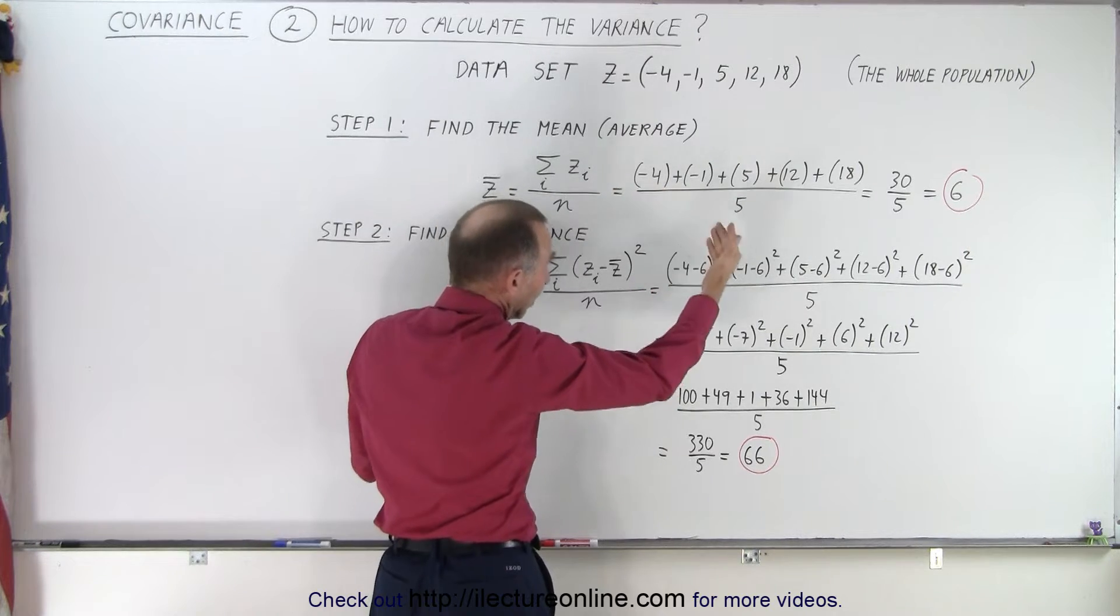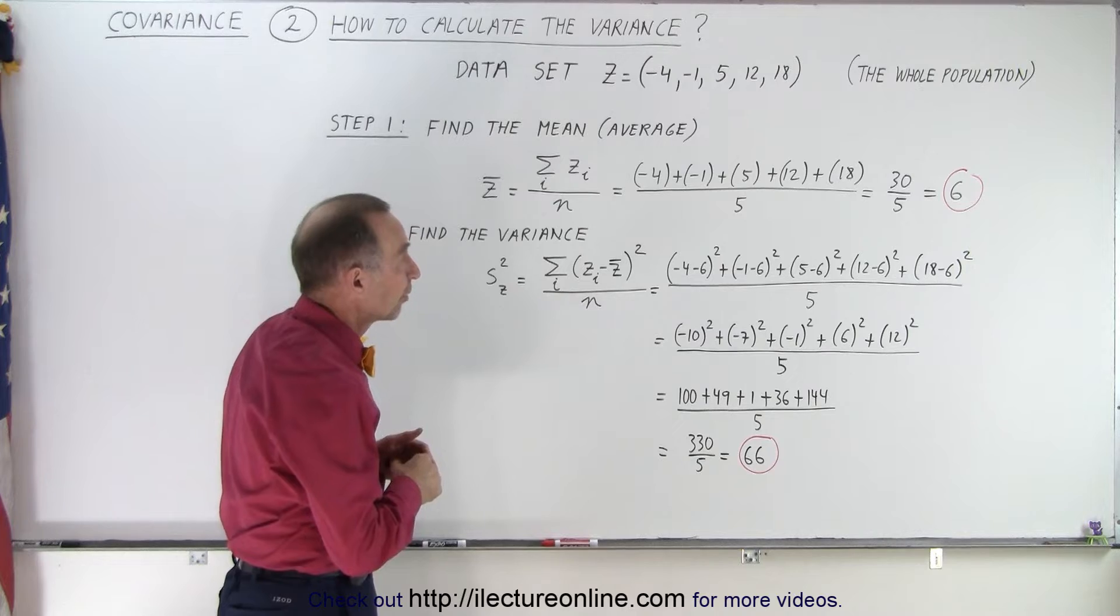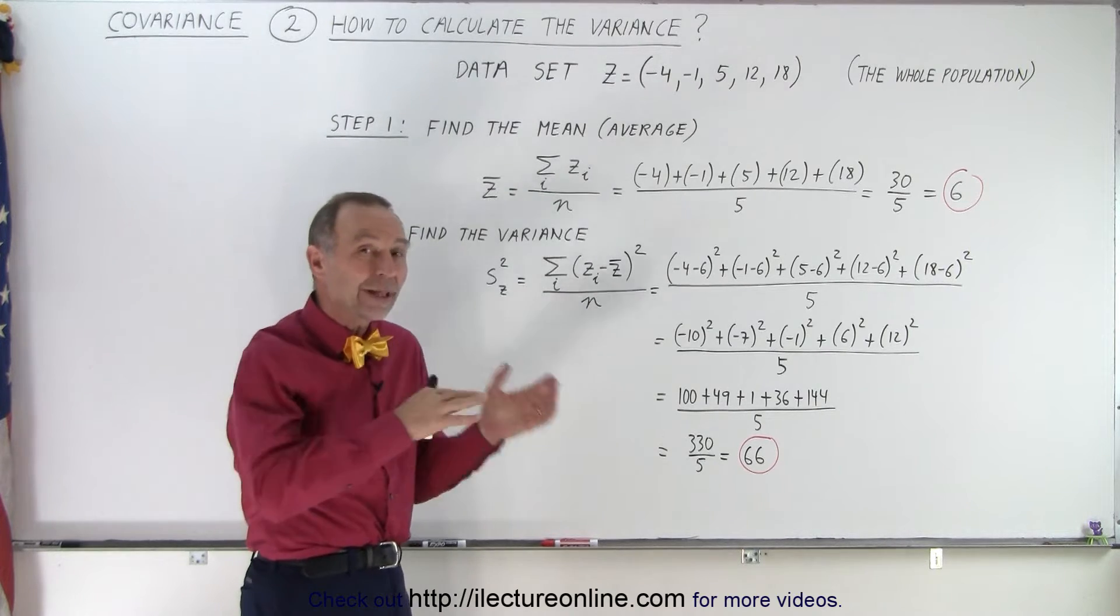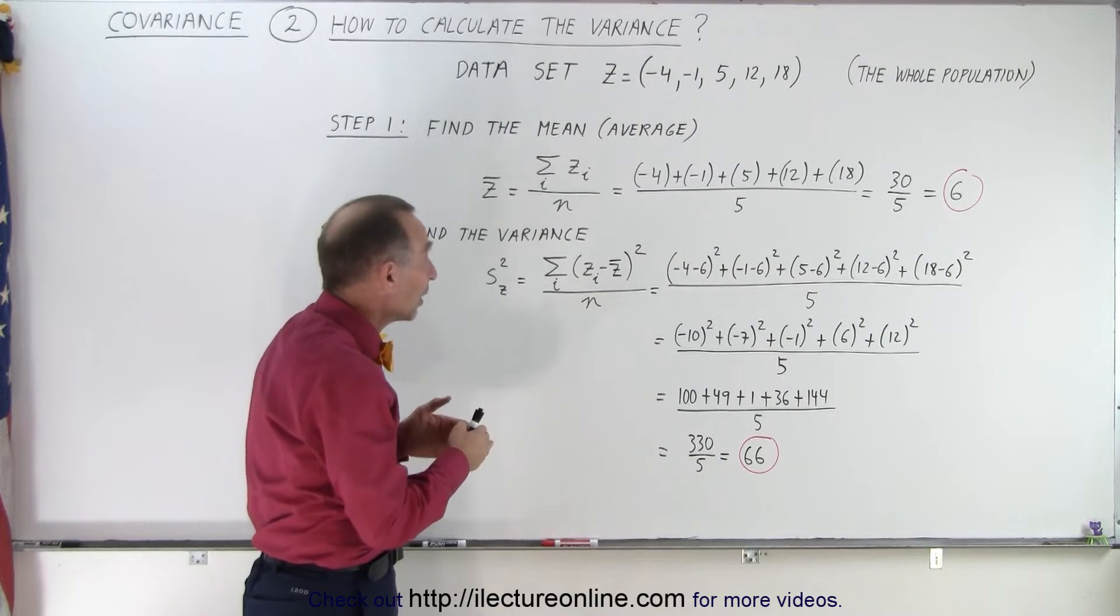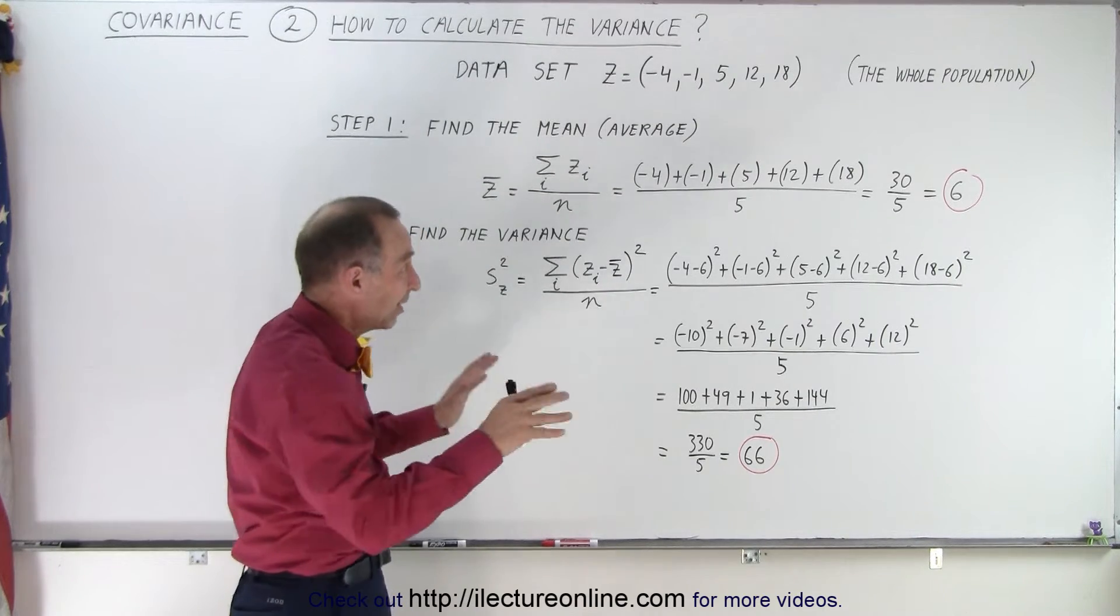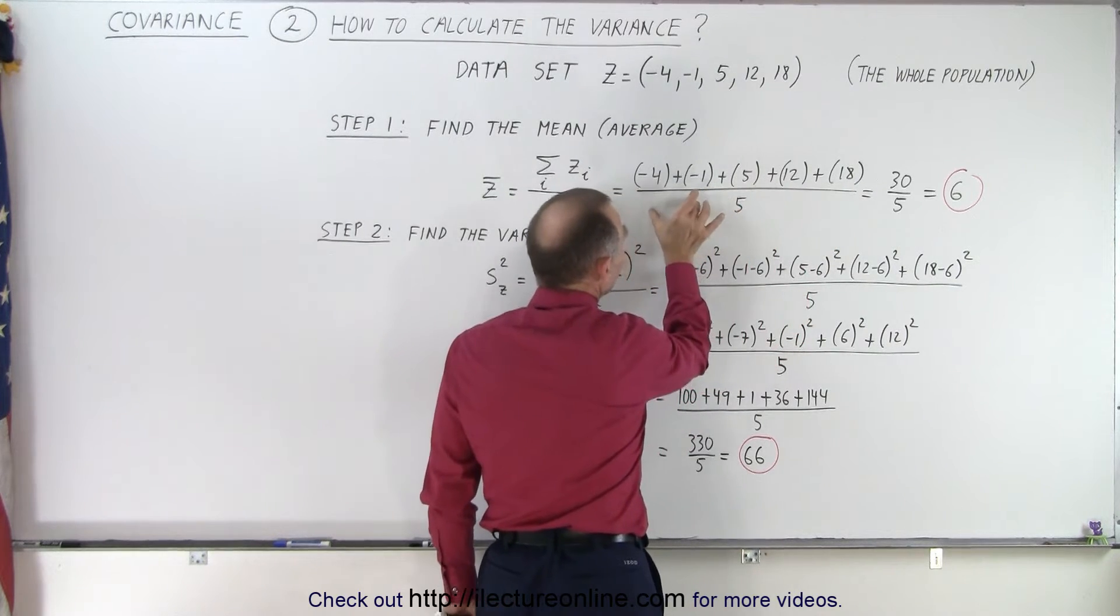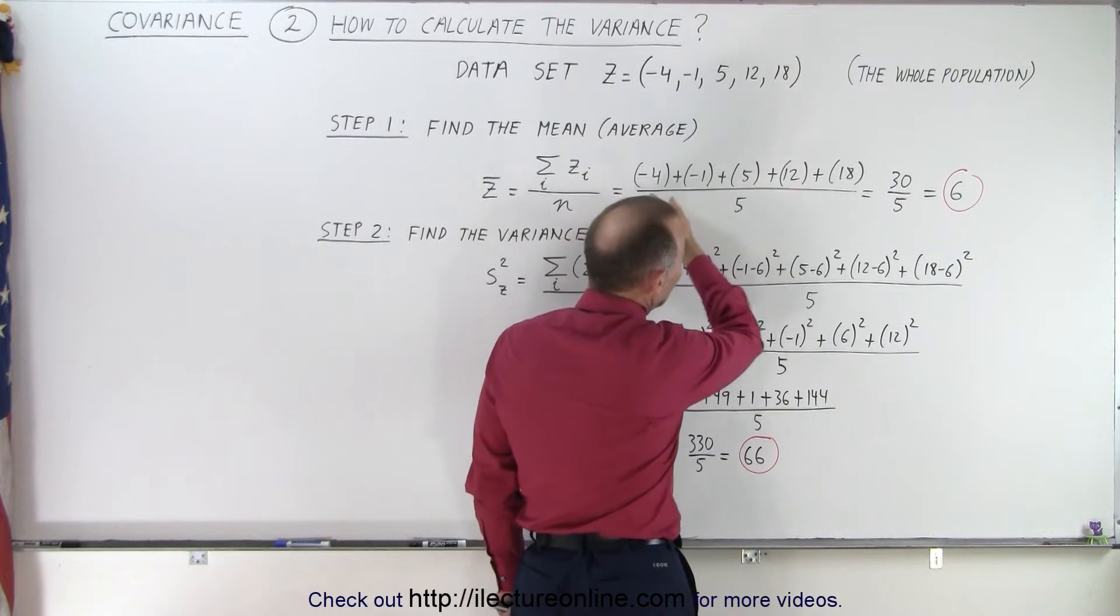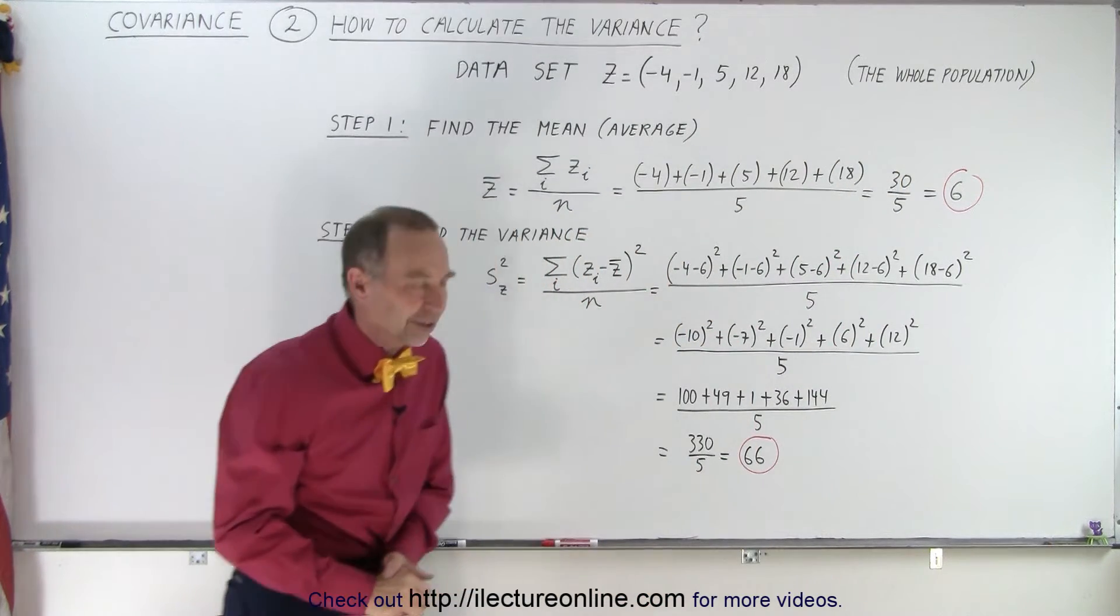Notice that negative numbers are added as negative numbers and positive numbers as positive numbers. So if we have the same quantity and value of negative and positive numbers, then the average would be zero. But in this case, we have more positive numbers and the positive numbers are bigger than the magnitude of the negative numbers. So we add it all up, we get 30 divided by 5, which gives us an average of 6.